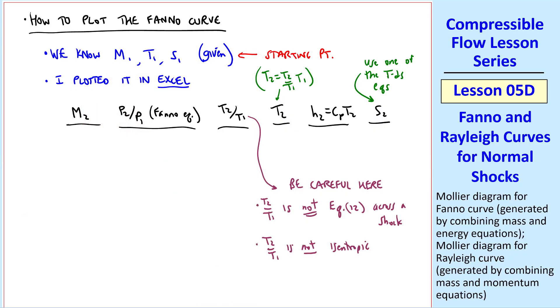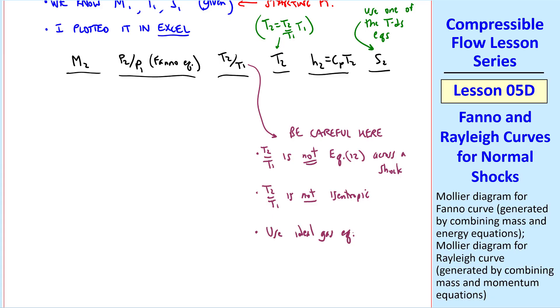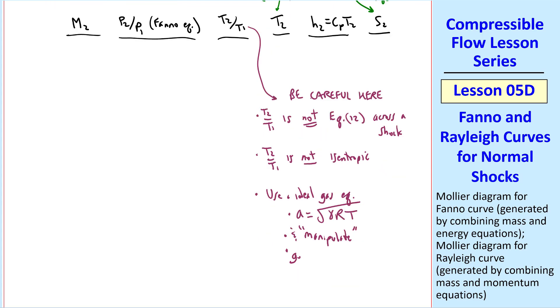T2 over T1 is not equation 12, which applies only across a shock. T2 over T1 is not isentropic either, since S changes along the Fanno curve. So what do you do? Use the ideal gas equation, use the equation for speed of sound, and again, as I like to say, manipulate. If you do this correctly, you get T2 over T1 as a function of pressure ratio and the ratio of M2 to M1. Keeping in mind that we know M1 from our starting conditions, and then you just create rows with various values of M2.